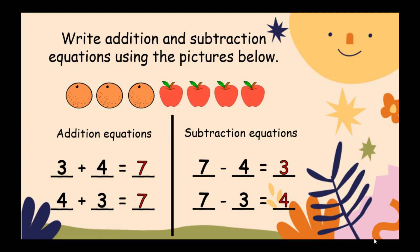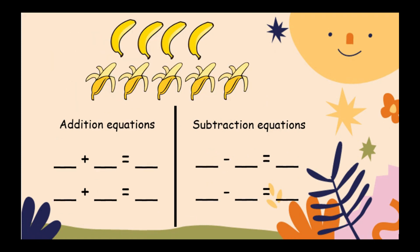Four. There are four unpeeled bananas plus five peeled bananas—that's nine bananas in all. Another addition equation we can make: five plus four equals nine. This time we will make subtraction equations using the pictures. Nine minus four equals five, or nine minus five equals four.